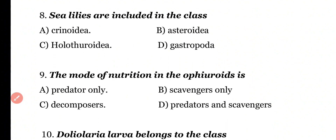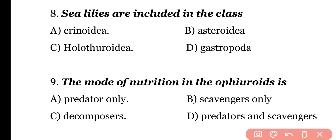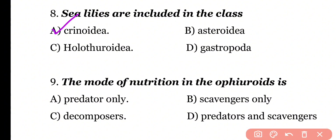Question 8: Sea lilies are included in the class Crinoidia, Asteroidia, Holothuroidia, or Gastropoda? Correct answer is Option A. Sea lilies belong to the most primitive class of Echinoderms, which is Crinoidia.